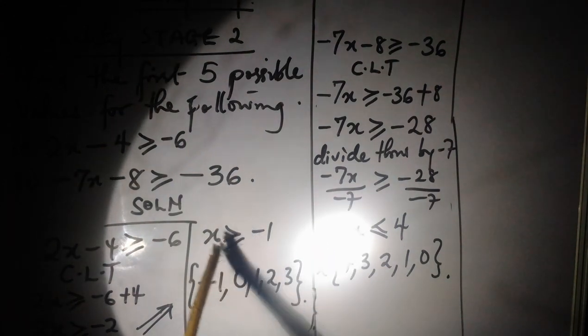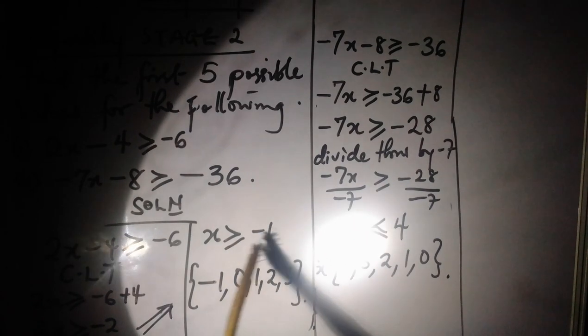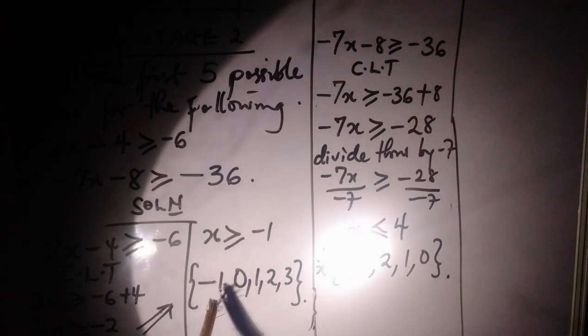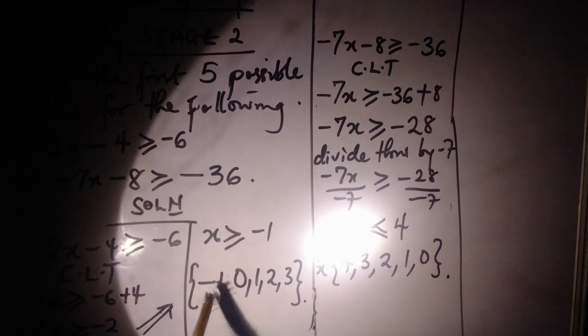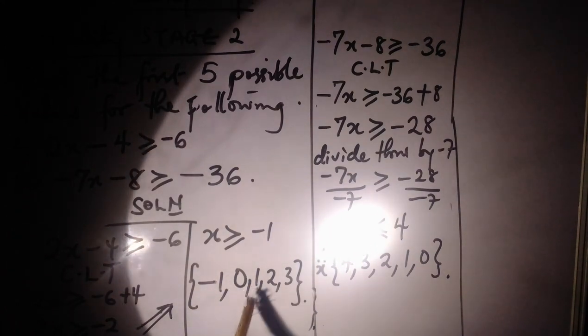Now, it's also equal to, so you have to start with -1. So there's -1, and others are now greater: 0, 1, 2, 3. These are the first 5 possible values for x.